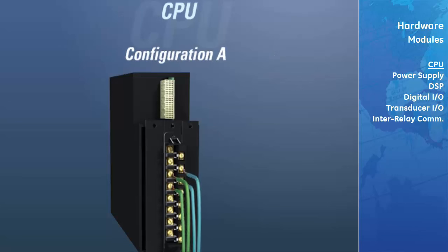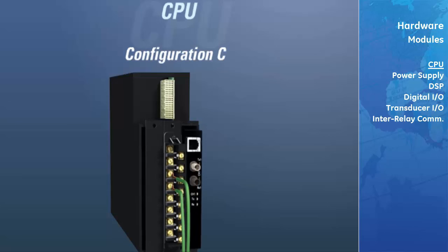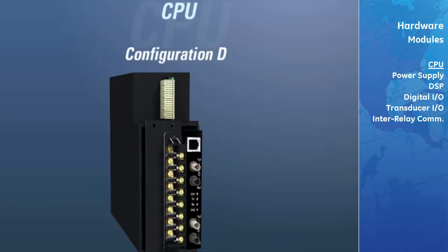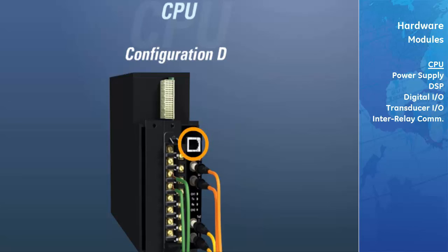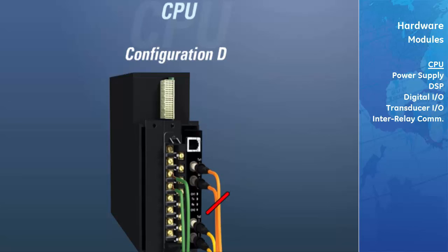The A version supports two RS-485 network ports located on the CPU terminal block. The C version has one RS-485 port, one single fiber-optic ethernet port, and one network port for testing purposes only. The D version has one RS-485 port, one primary and one redundant fiber-optic ethernet port, and one network port for testing. The relay normally uses the primary ethernet port for communications and will only switch to the redundant port if a problem is detected with the primary port or connected fiber-optic cable.